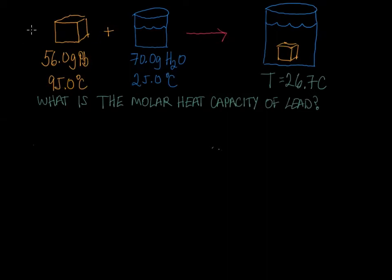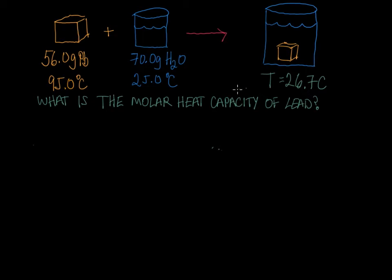The problem states that we have a 56.0 gram mass of lead at 95 degrees Celsius that's placed into 70.0 grams of water initially at a temperature of 25.0 degrees Celsius, and the water warms up to 26.7 degrees Celsius. We're asked what is the molar heat capacity of lead.